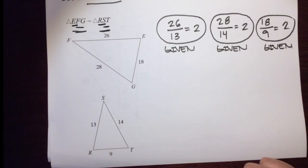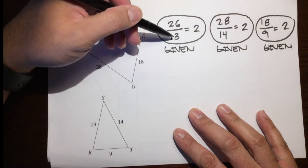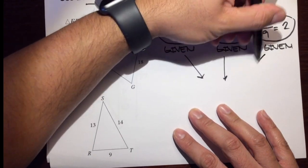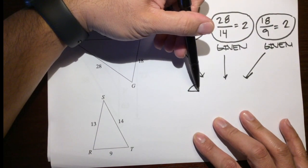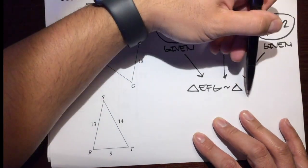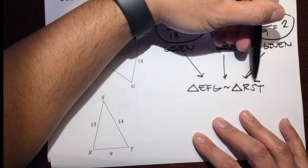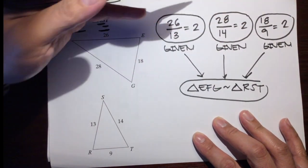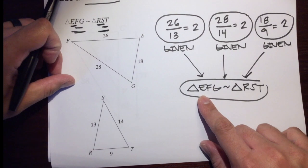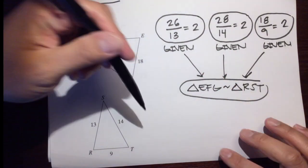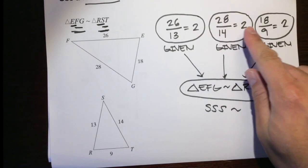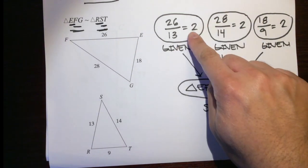Now that we know this side, this side, and this side are all proportional, we can go to the conclusion that triangle EFG is really similar to triangle RST. We circle that conclusion bubble. This triangle really is similar because of side, side, side similarity — because all three sides are proportional with equal ratios.